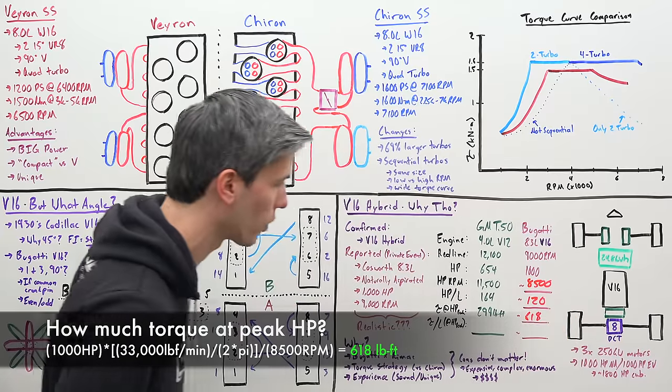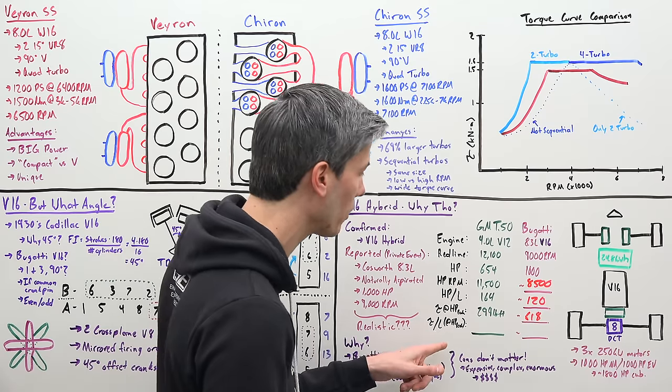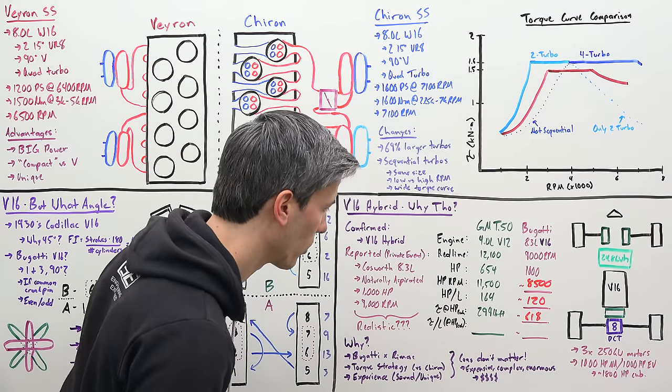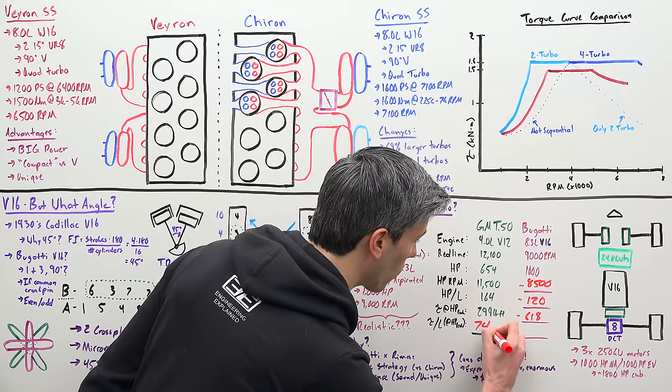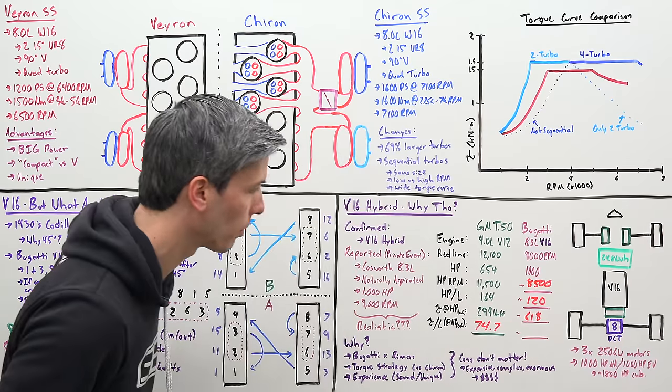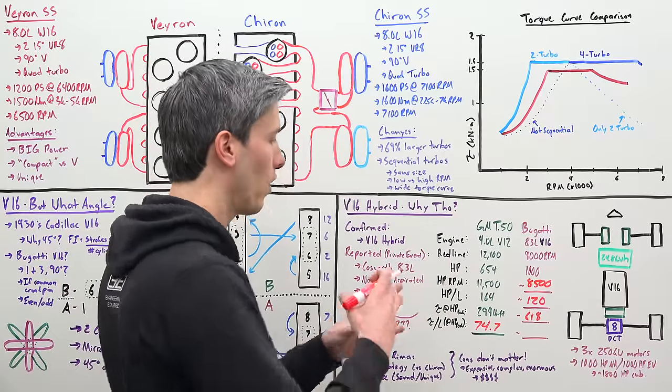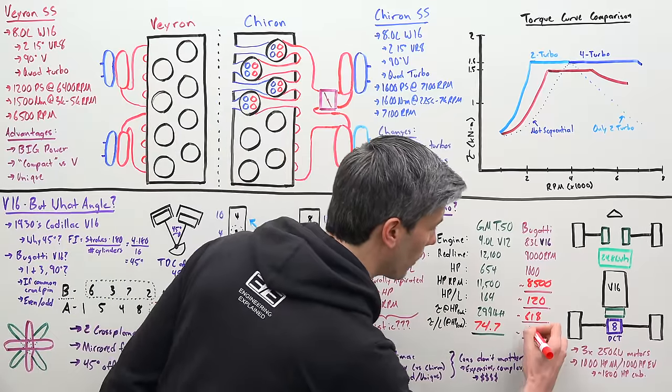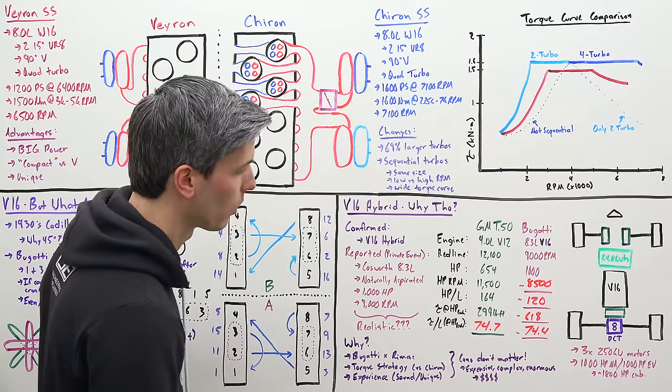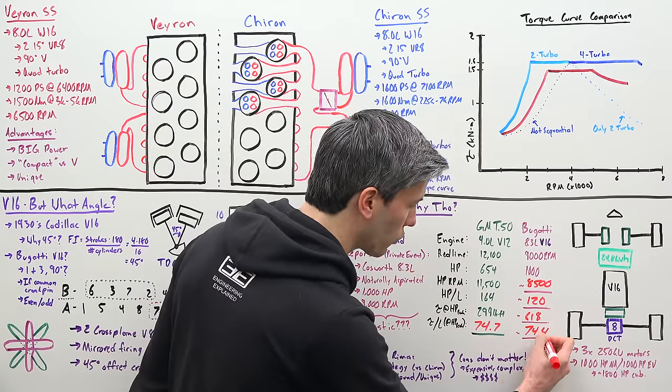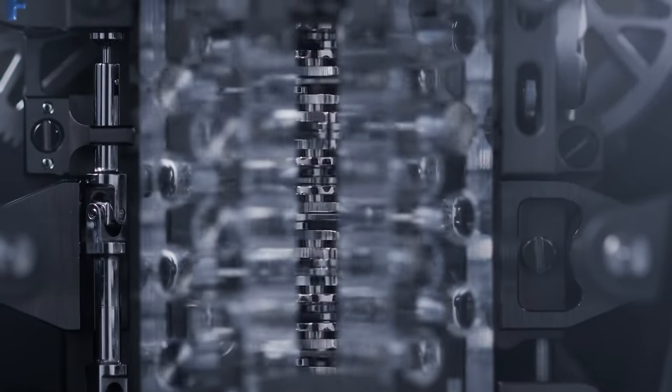A better way of doing this is looking at brake mean effective pressure, or simpler, looking at torque per liter. The Gordon Murray T50 4.0 liter Cosworth V12 engine is making 299 pound-feet of torque at its peak horsepower number at 11,500 rpm. We can calculate the same for the Bugatti: if it were making a thousand horsepower that would be 618 pound-feet of torque at 8,500 rpm. Now what is our torque per liter at that peak horsepower number? For our Gordon Murray T50 that number is 74.7 pound-feet per liter, and for our Bugatti the number ends up being 74.4 pound-feet per liter. These numbers are extremely close to one another, so the numbers are feasible.